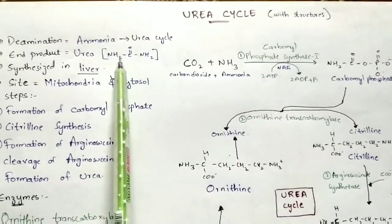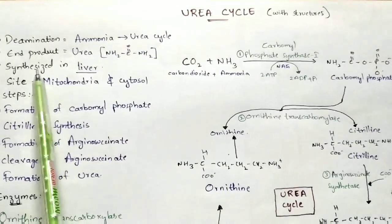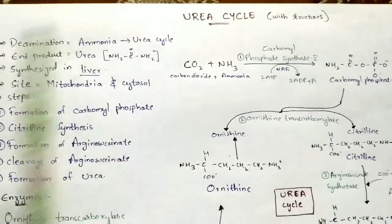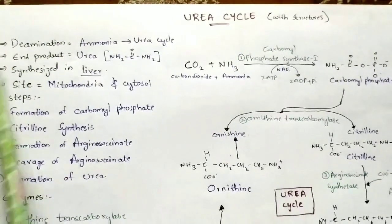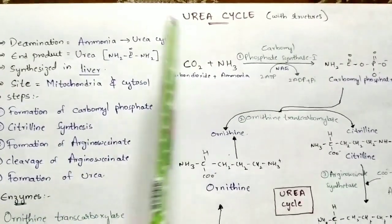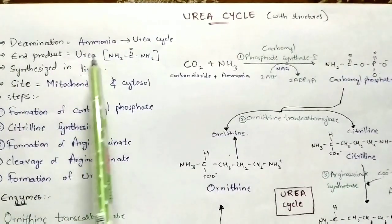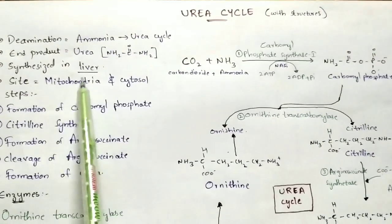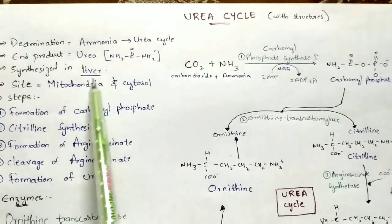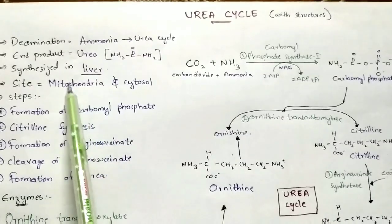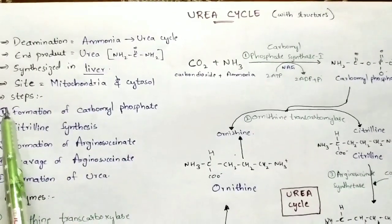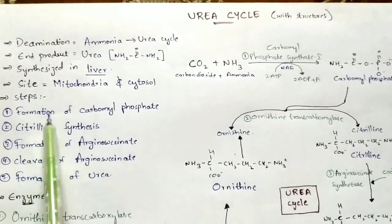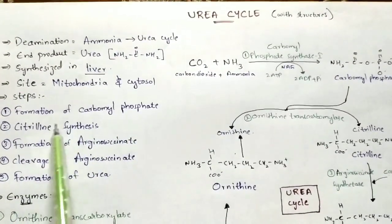The end product of the urea cycle is urea, and this is the molecular structure of urea. This urea cycle is synthesized in the liver. The site where the urea cycle occurs is in the mitochondria and the cytosol — the first two steps occur in the mitochondria and the remaining steps occur in the cytosol.